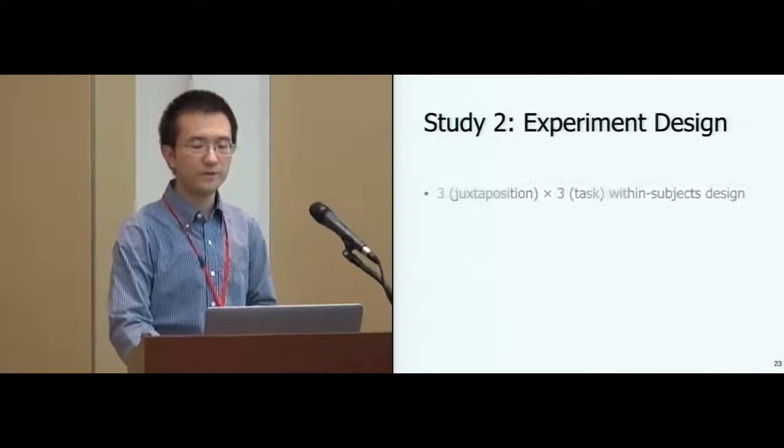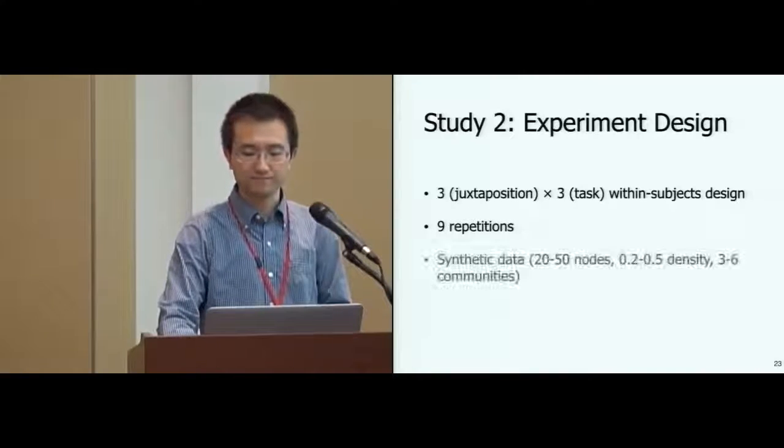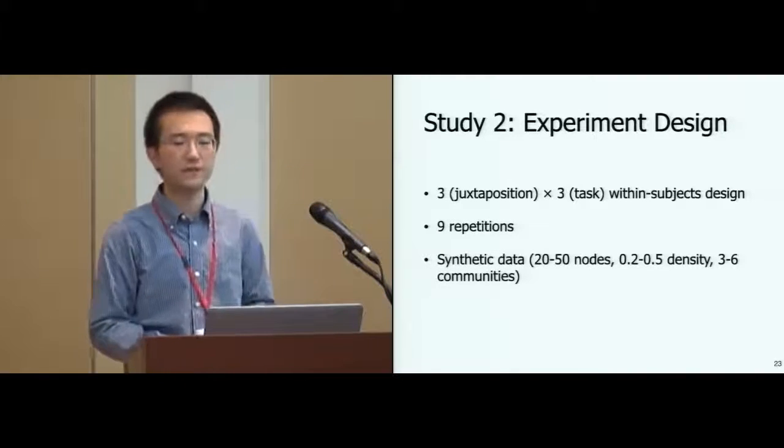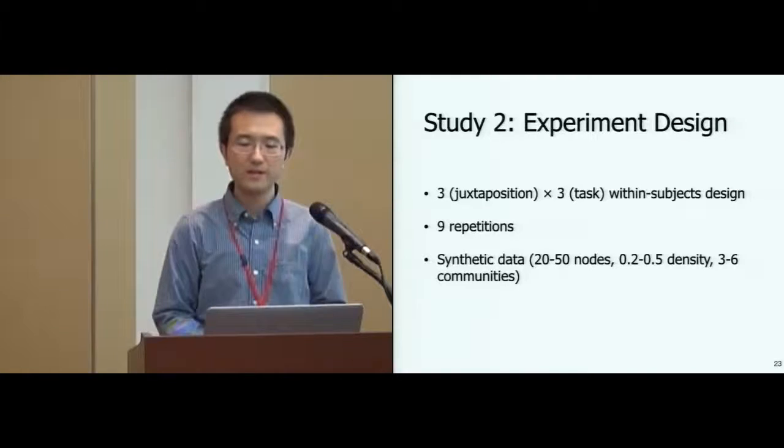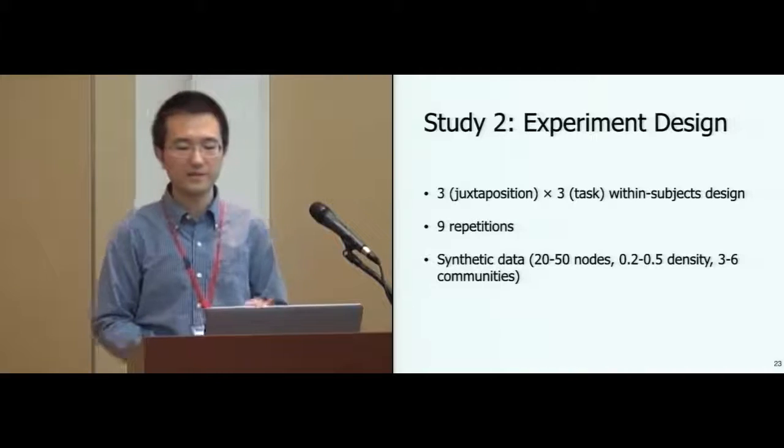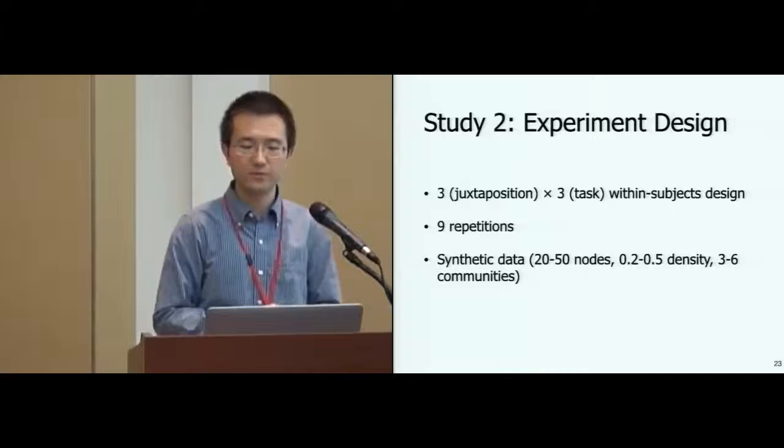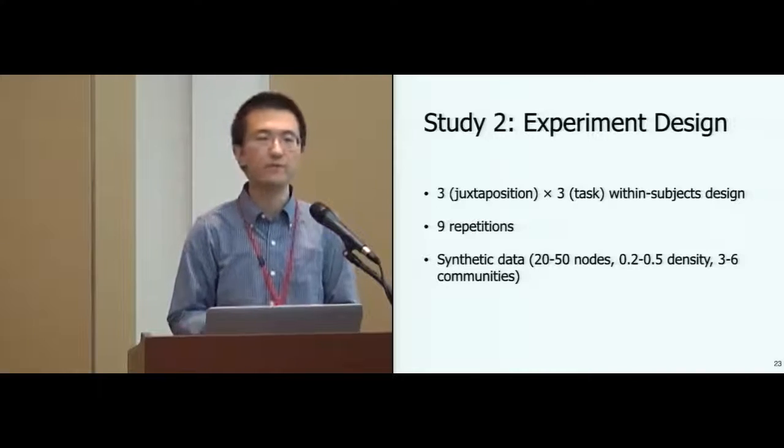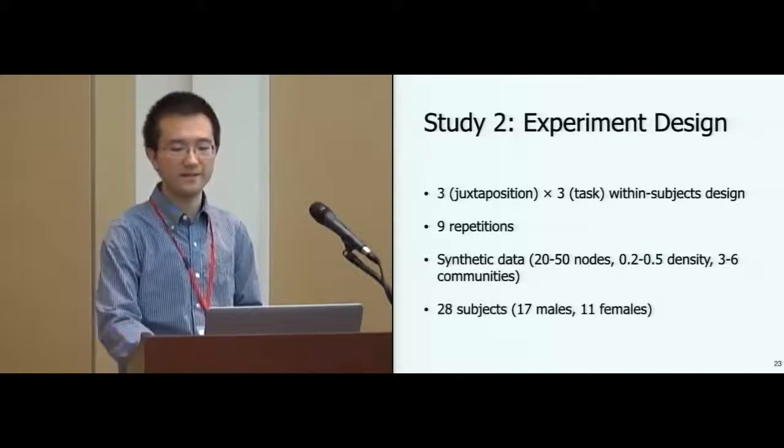The experiment uses a three-by-three within-subjects design with nine repetitions. We follow the design choices we made in our first experiment, so for each synthetic network, we randomly assign several nodes to a different community and add edges for randomly selected nodes. The original and the new matrices were then grouped together using one of the three juxtaposition designs. Twenty-eight users participated in this study.